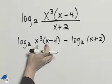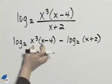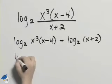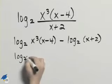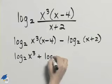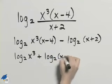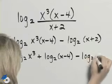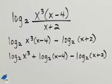I can then use the product property to expand this piece. This will expand to log base 2 of x cubed plus log base 2 of x minus 4. We still have log base 2 of x plus 2 and that's subtracted.